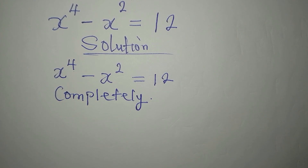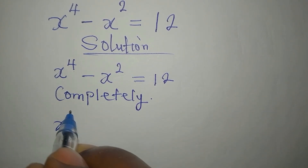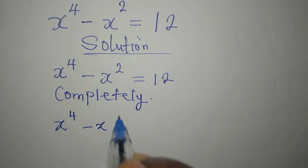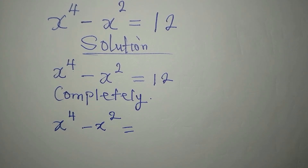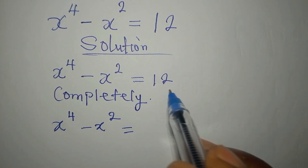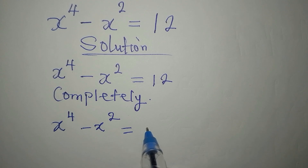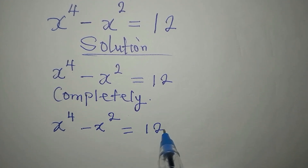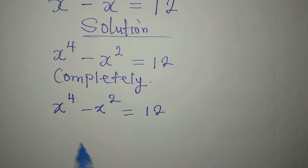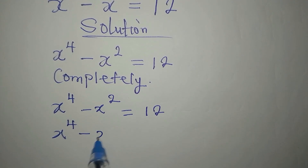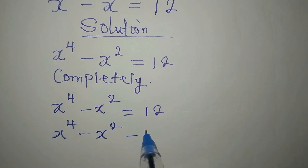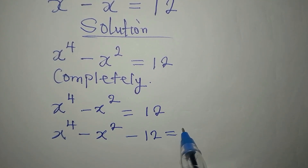So what do we do? We have x to the power of 4 minus x to the power of 2 equals 12. Let's bring 12 to the left, so we have x to the power of 4 minus x to the power of 2 minus 12 equals 0.